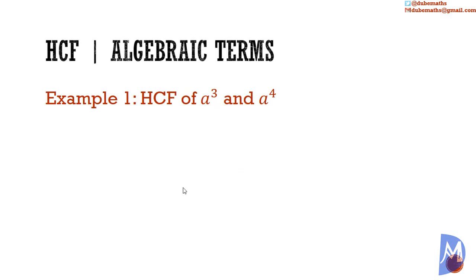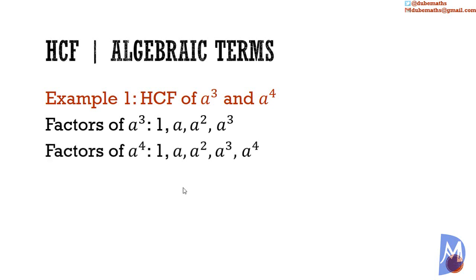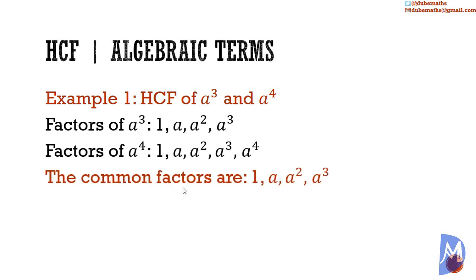The highest common factor of two terms: a to the third power and a to the fourth power. The factors of e to the third power are 1, e, e squared, and e to the third power. The factors of e to the fourth power are 1, e, e squared, e to the third power, and e to the fourth power. Thus, the common factors are 1, e, e squared, and e to the third. And the highest common factor is e to the third power.